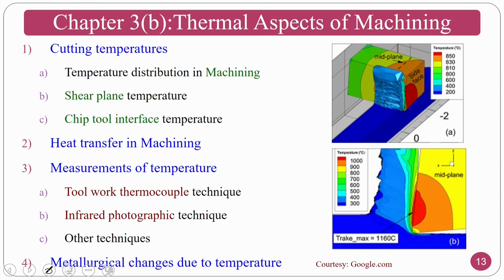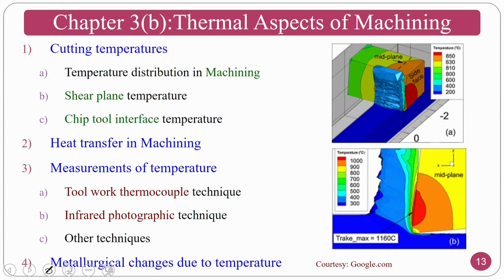In Chapter 3B we deal with the thermal aspects of machining — how to determine tool temperatures and chip temperatures. The cutting temperature distribution in machining is covered, including the shear plane and chip-tool interface, which normally carries the highest temperature. Heat transfer in machining covers how heat is distributed to the three components: chip, tool, and workpiece. We also cover measurement of temperature using tool-work thermocouple technique, infrared, and other techniques, as well as metallurgical changes due to temperature on the surface of the workpiece.